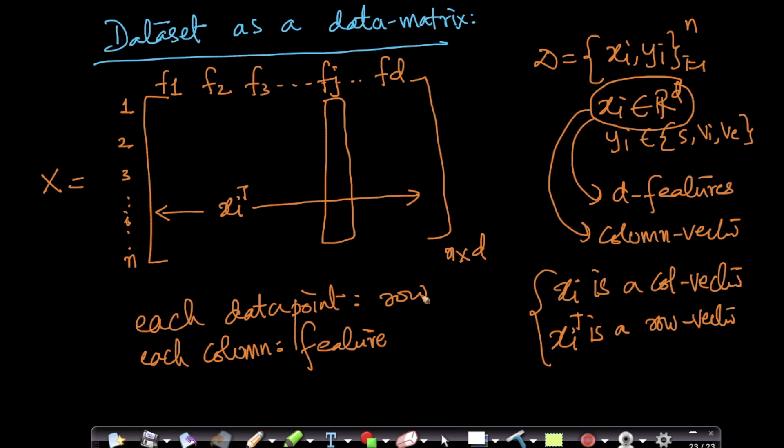There is also exactly similar way of representing where my X could be represented as this, where each row represents my features f1, f2, f3, and so on fj, so forth fd.